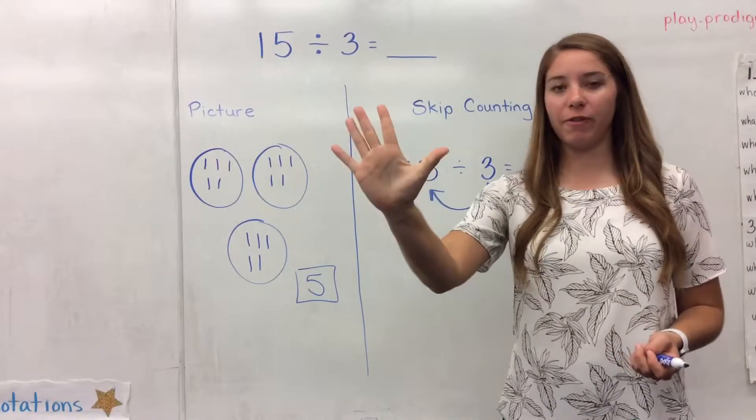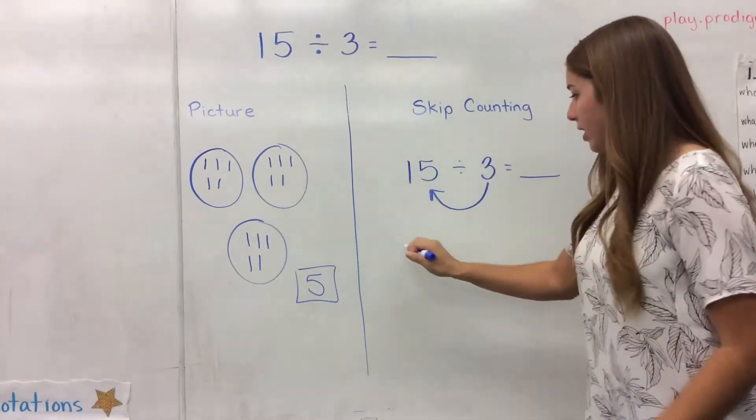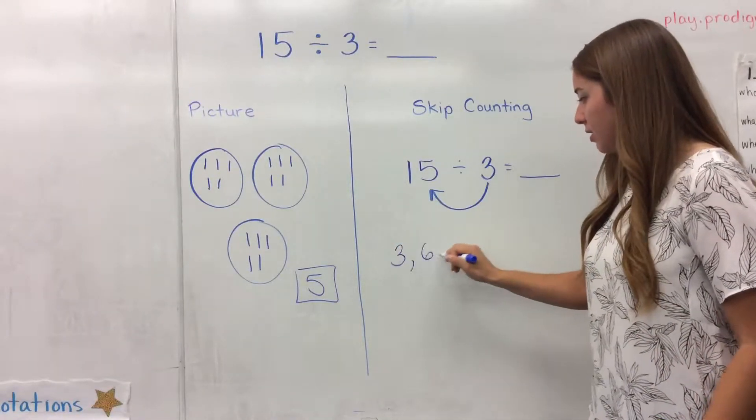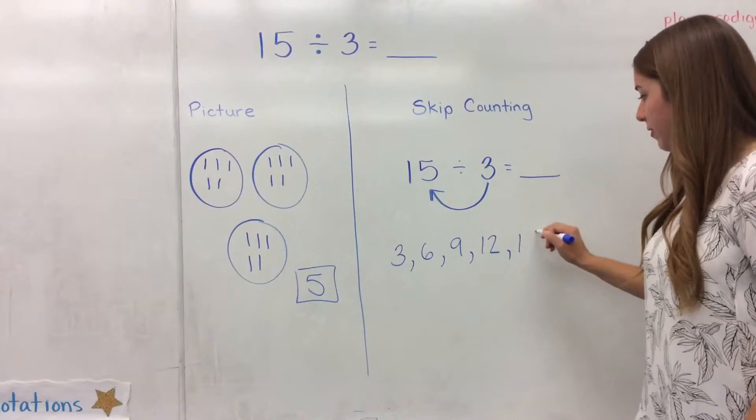3, 6, 9, 12, 15, and I stop. So I can write that down. 3, 6, 9, 12, 15.